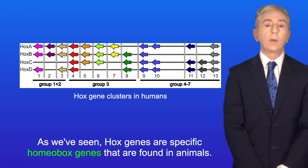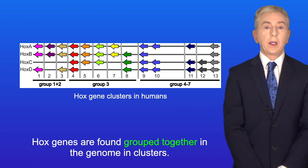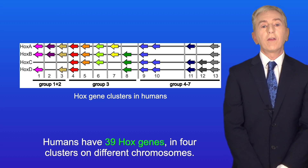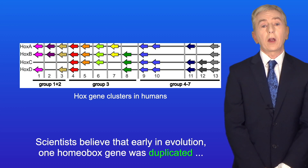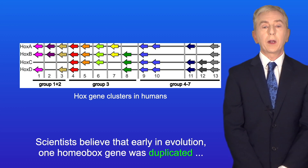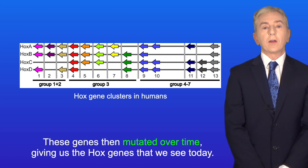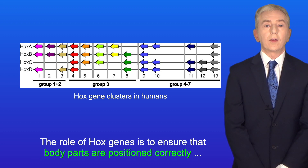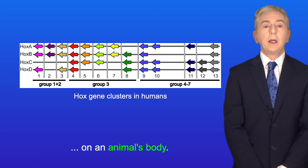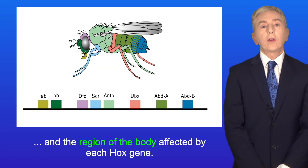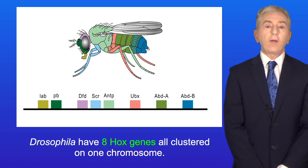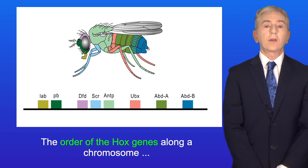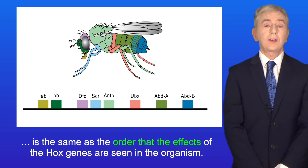HOX genes are specific homeobox genes found in animals. They are found grouped together in the genome in clusters. Humans have 39 HOX genes in four clusters on different chromosomes. Scientists believe that early in evolution, one homeobox gene was duplicated, forming multiple homeobox genes. These genes then mutated over time, giving us the HOX genes we see today. The role of HOX genes is to ensure that body parts are positioned correctly on an animal's body. The order of the HOX genes along a chromosome is the same as the order that the effects of the HOX genes are seen in the organism.